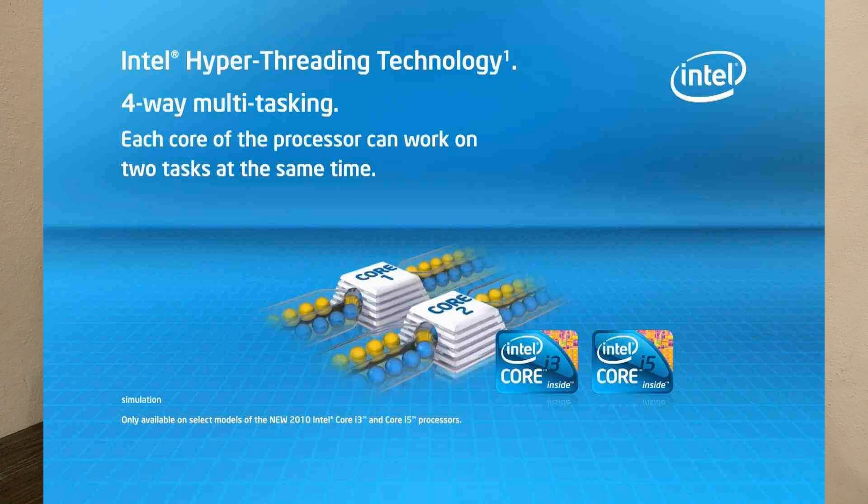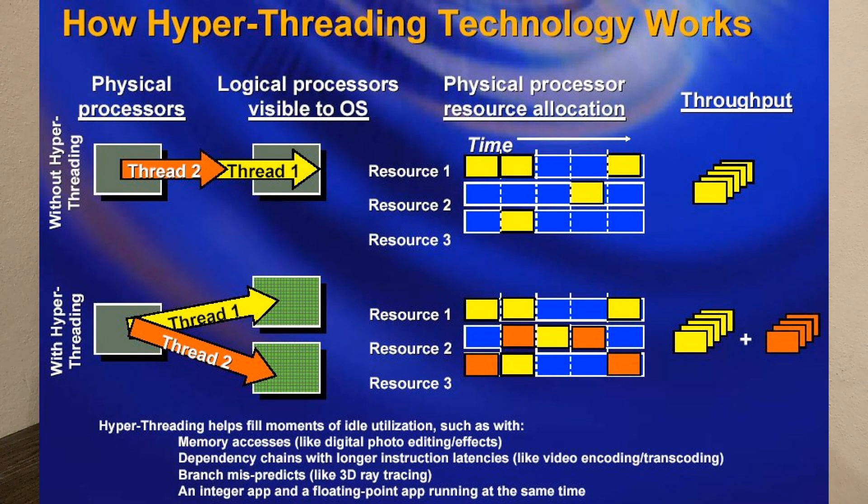A dual-core processor has two parts, so it can handle one image in two parts simultaneously. With quad-core we have four cores working together, completing tasks in less time. We also have hyper-threading technology in CPUs — a dual-core with hyper-threading behaves like 4 cores, and an octa-core behaves like 16 cores.